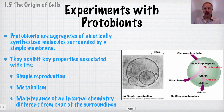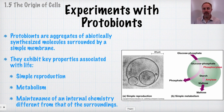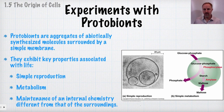Protobionts are basically aggregates of abiotically synthesized molecules surrounded by a simple membrane. They exhibit some of the key properties associated with life — they can reproduce themselves, as you can see in this diagram, giving rise to more protobionts with a simple membrane and an internal chemistry different from the external chemistry, which is what we refer to as metabolism.